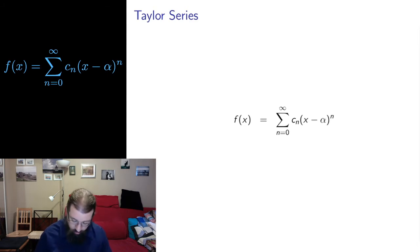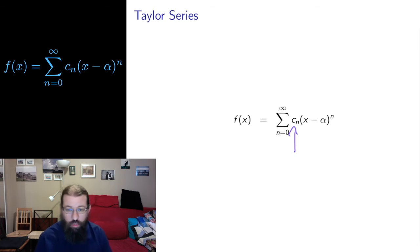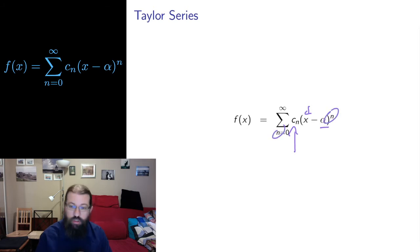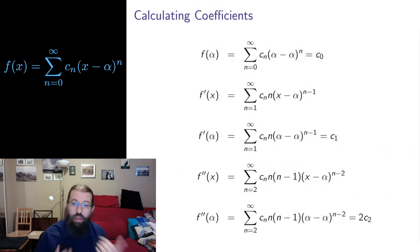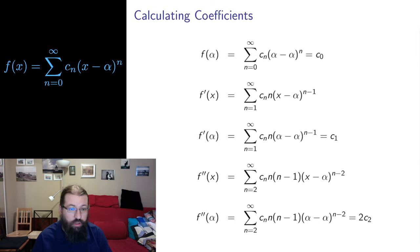To determine the Taylor series, what I need to calculate is the coefficients. Once I know the coefficients and I've chosen the center point, x is the variable and the indices n are just the indices of the sum — everything is determined. I choose a center point and calculate the coefficients; that gives me a Taylor series. Let's talk about calculating coefficients. We're going to work in general because I want to show you where the general formula for calculating coefficients comes from.